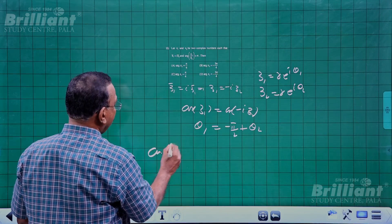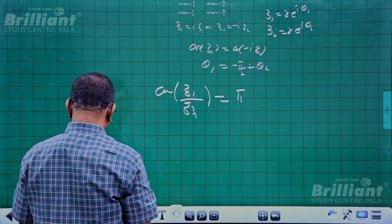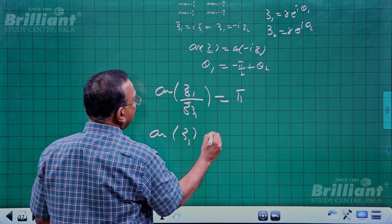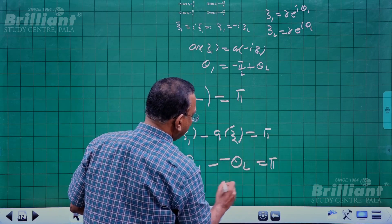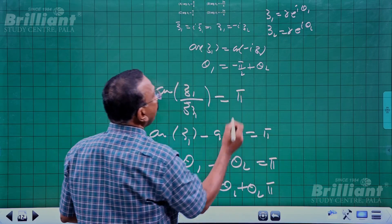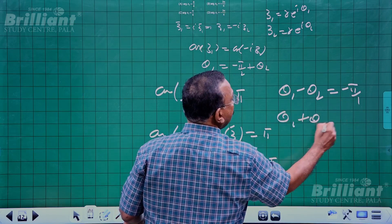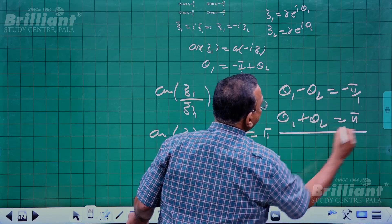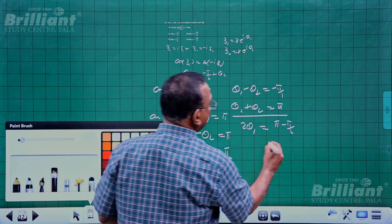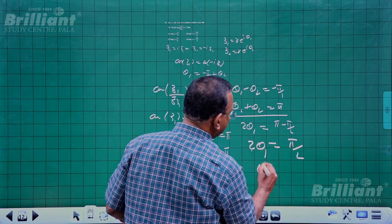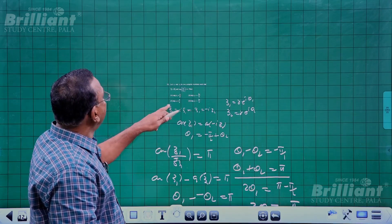The second condition is arg(z₁/z̄₂) = π, meaning arg(z₁) - arg(z̄₂) = π, so θ₁ - (-θ₂) = π, giving θ₁ + θ₂ = π. Adding the two equations: 2θ₁ = π - π/2 = π/2, so θ₁ = π/4. Therefore arg(z₁) = π/4, which is option C.